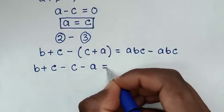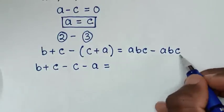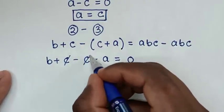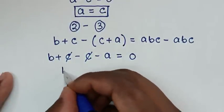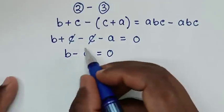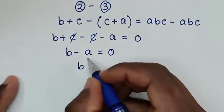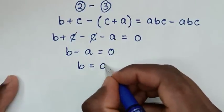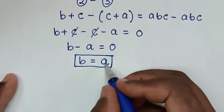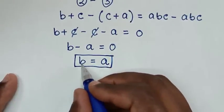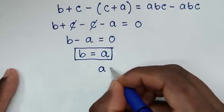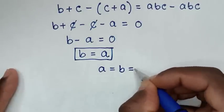Opening the bracket: B plus C minus C minus A equals 0. C minus C cancels, leaving B minus A equals 0, so B equals A. Since A equals B and A equals C, we conclude A equals B equals C.